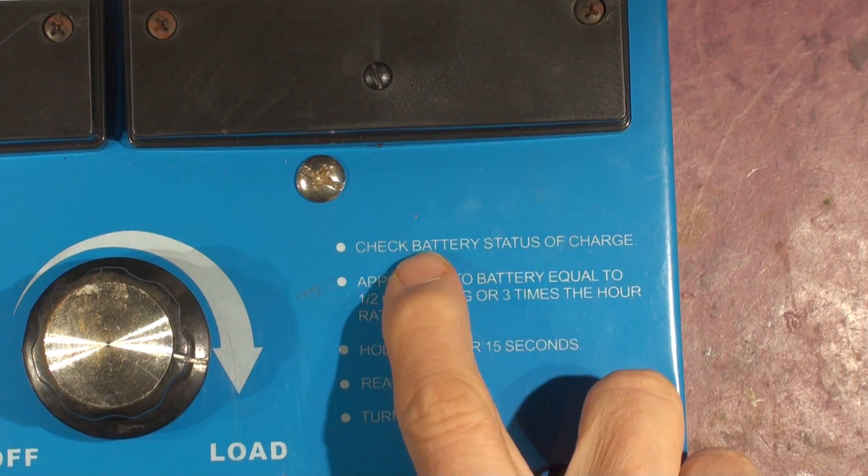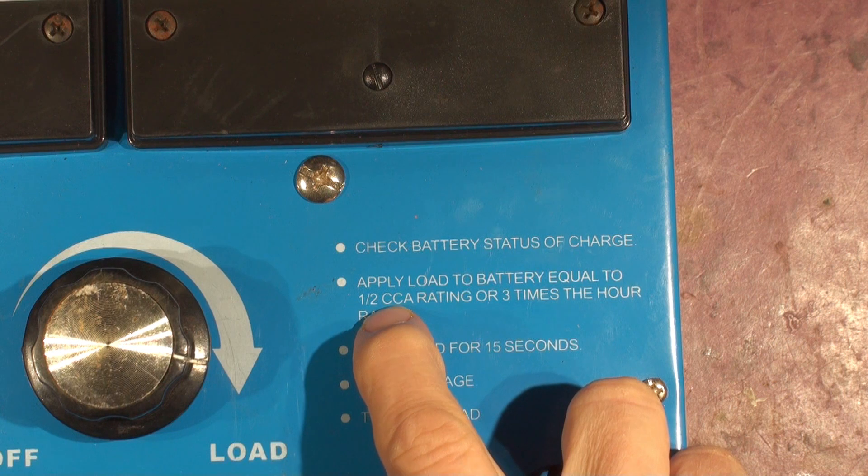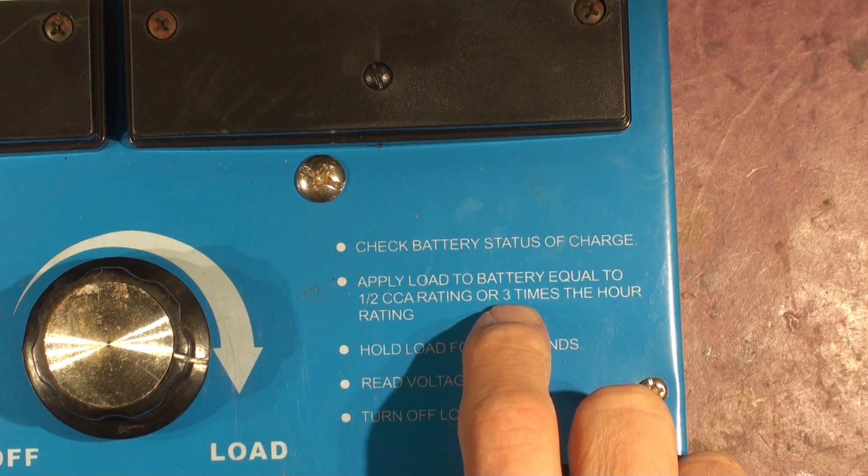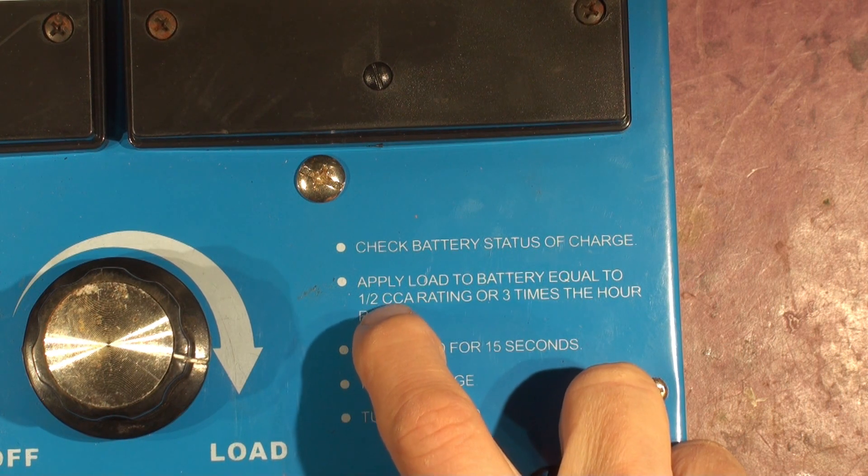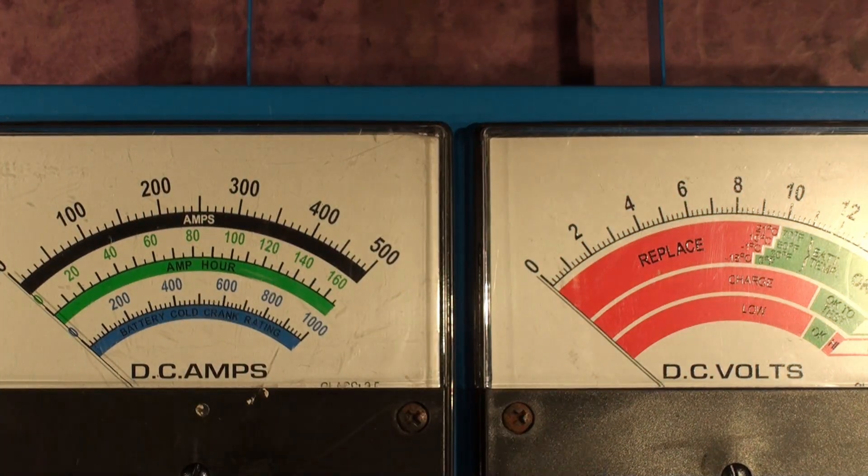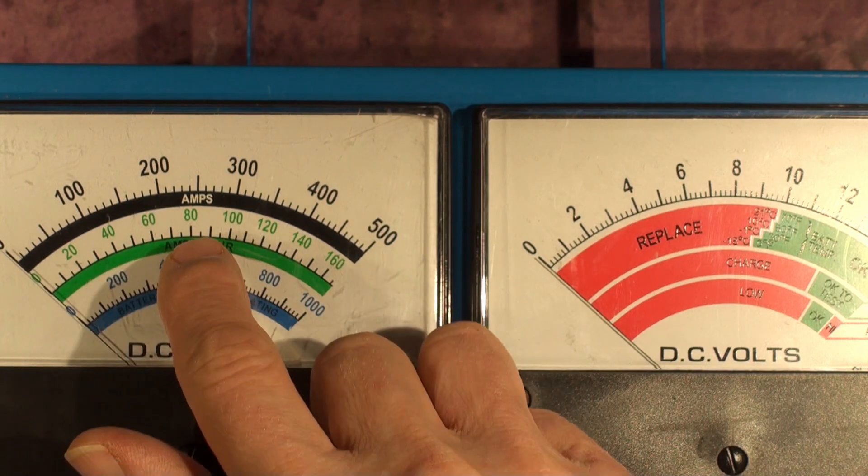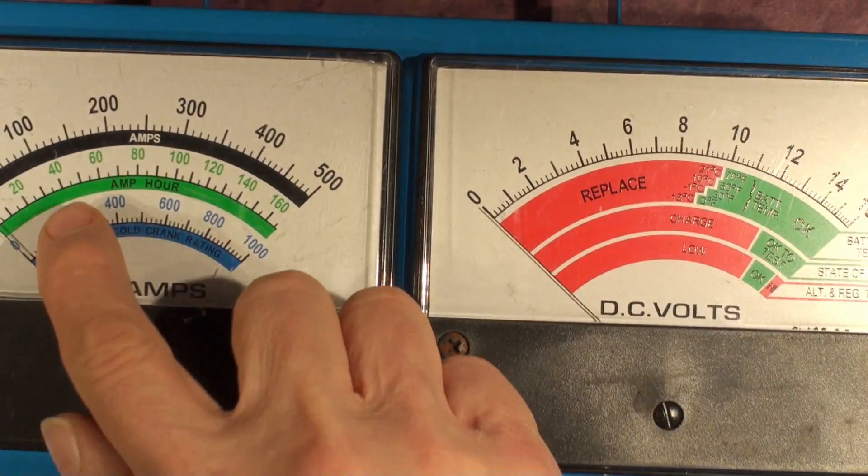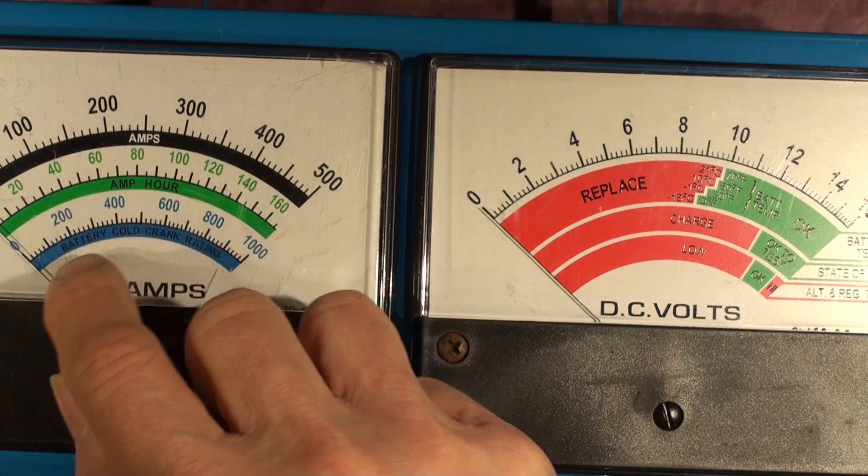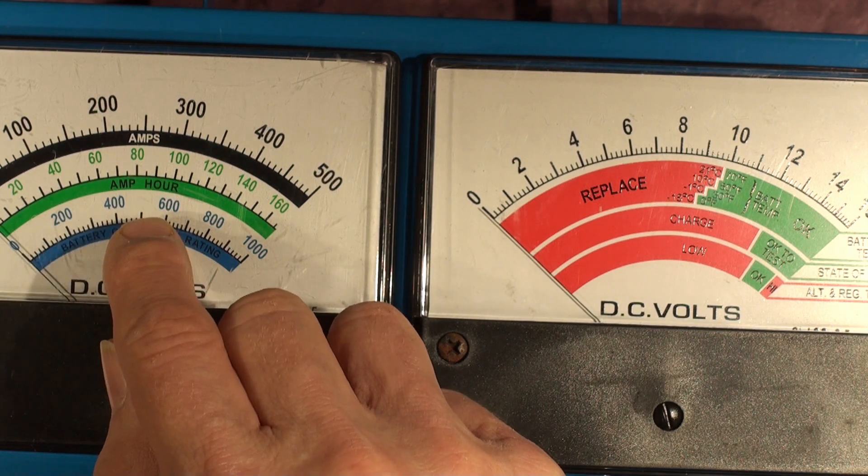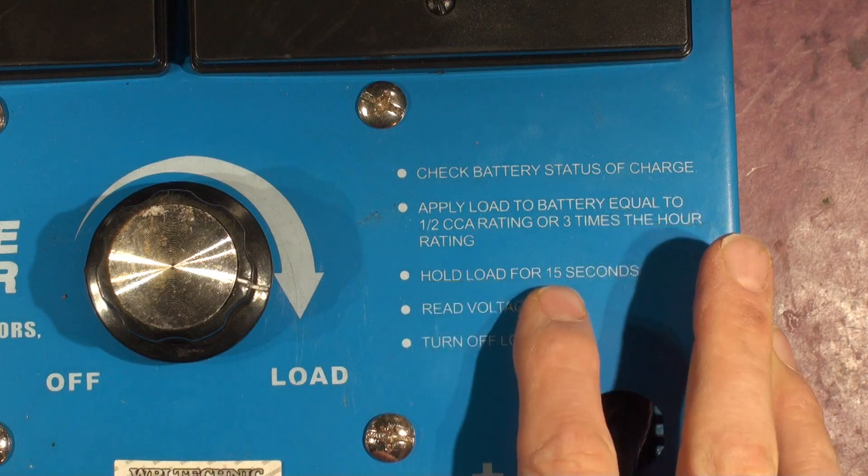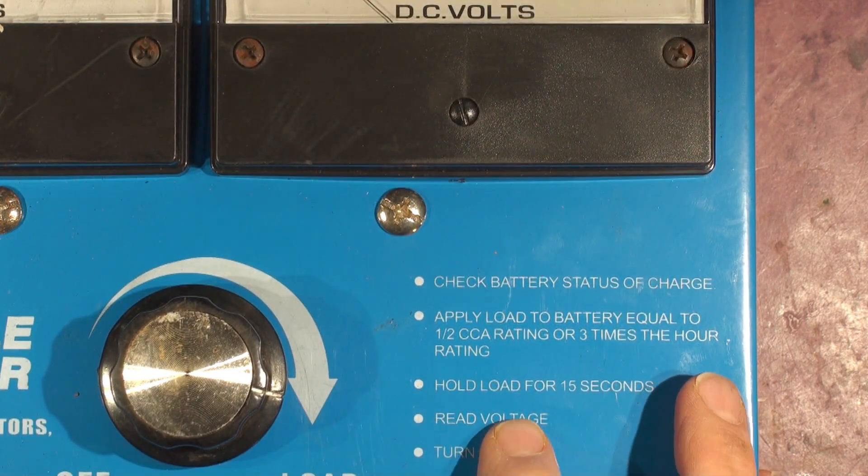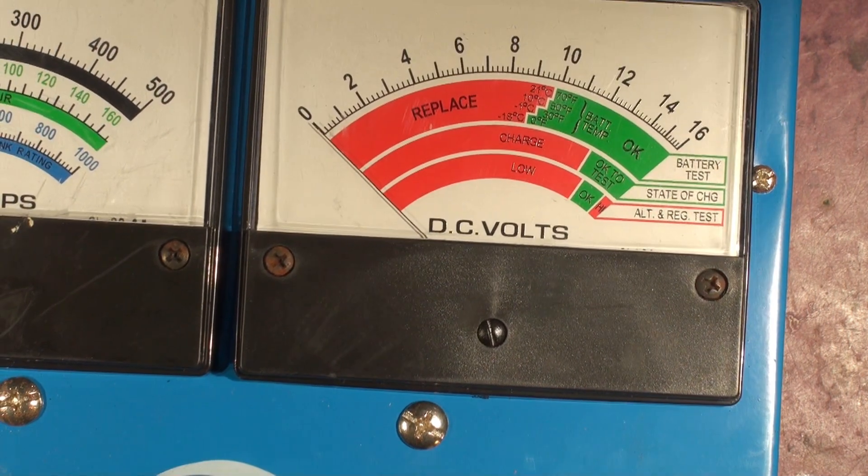Apply load to battery equal to half the cold cranking amperage or three times the hour rating. So if it's a 65 amp hour battery you would make it 195 amps. If it's a 600 amp cold cranking amp battery then you'd wind it up to 300 amps on the top scale. You wind it up, hold load voltage for 15 seconds, and then it says read voltage but what you're not reading voltage really, you're reading the battery condition.